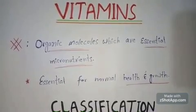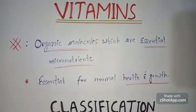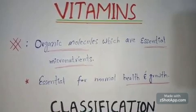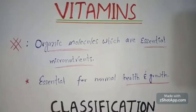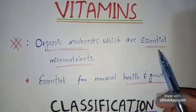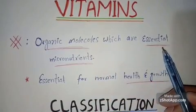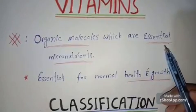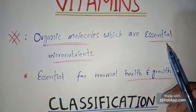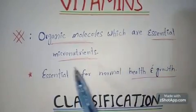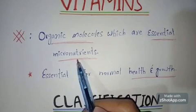Hello guys, I'm Dr. MS. Today I'm going to talk about vitamins and their classification. Let's define what vitamins are — you have to remember three things: number one, vitamins are organic molecules; number two, they are essential in nature, meaning vitamins cannot be synthesized inside our body, so we must take them from outside, either in the form of diet or supplementation.